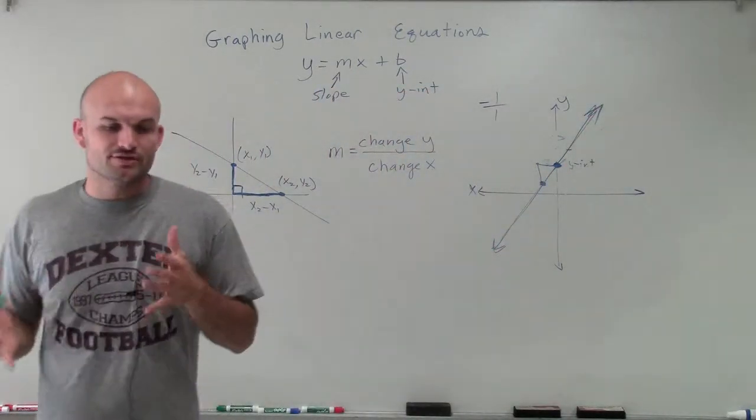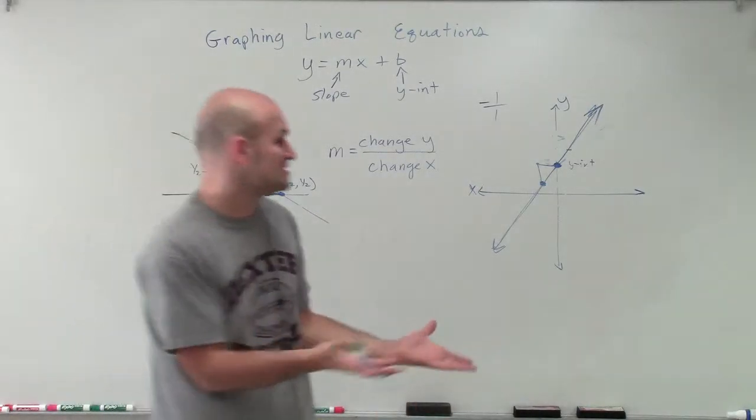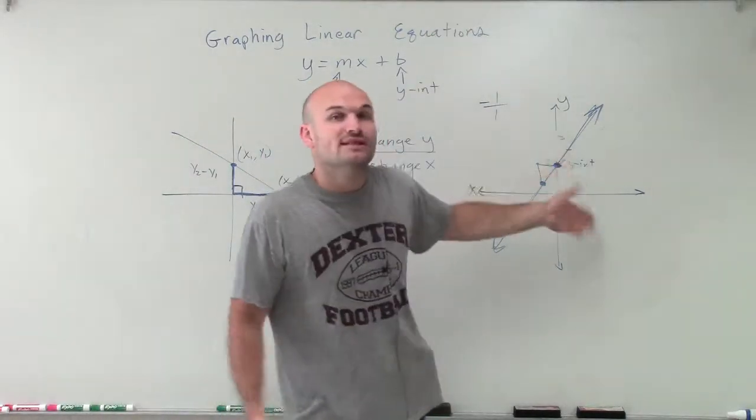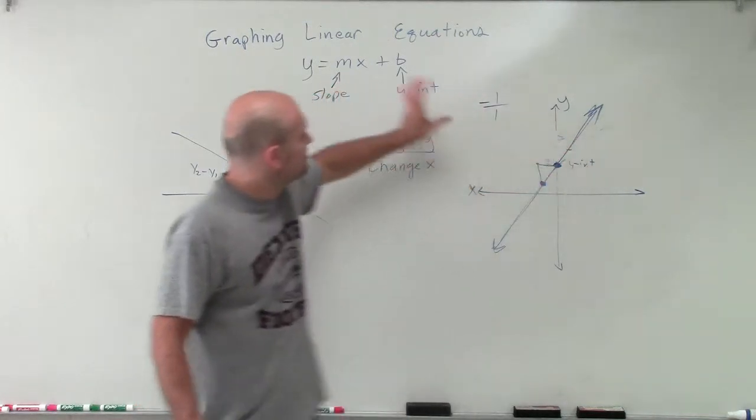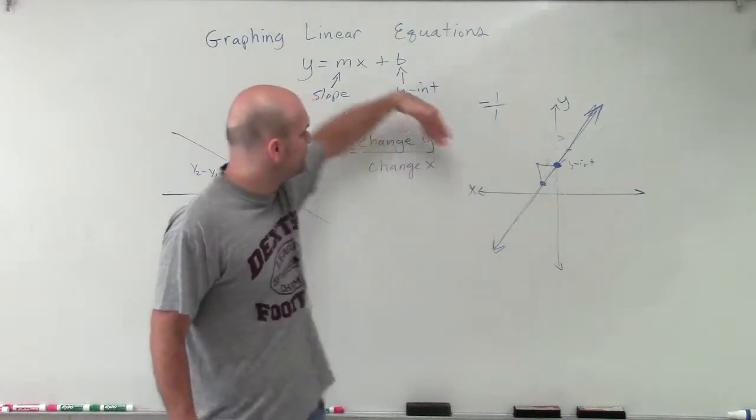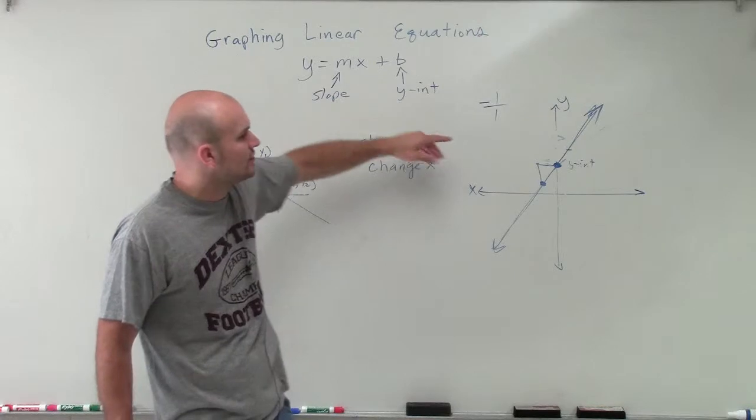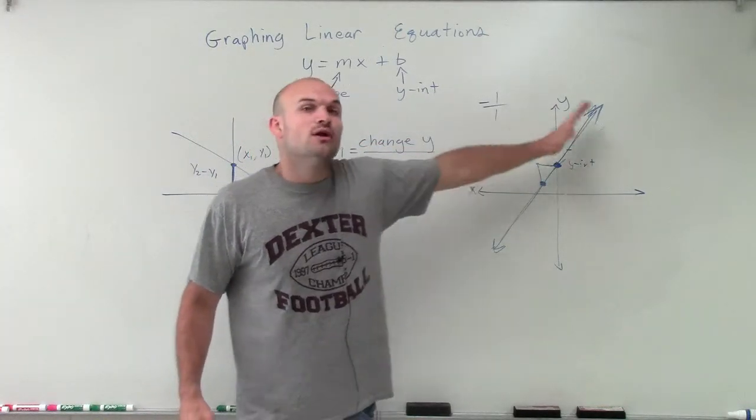So what we're going to do when we're using the slope-intercept form: the first thing we always want to do is find the y-intercept, because that's pretty obvious to point out. It's the point that's on the y-axis. You find that point.